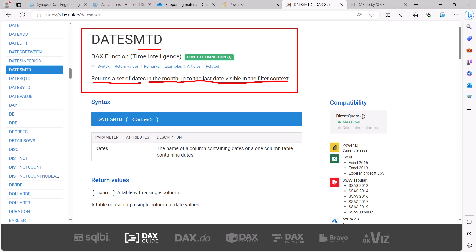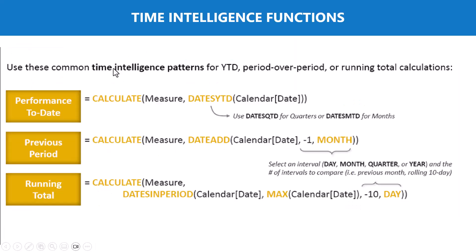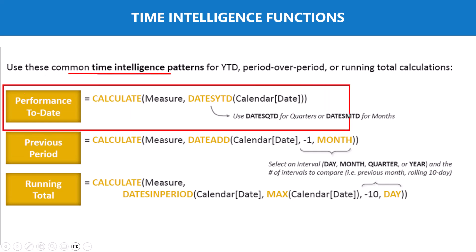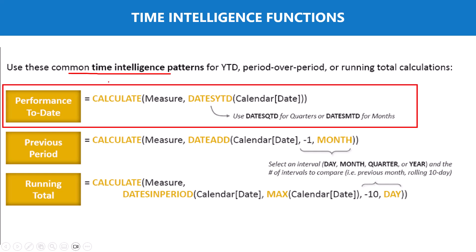Now let's go to the Power BI Desktop environment and see how we can use these functions. Before going into Power BI, there are three patterns we are going to look at. The focus for this video is the performance-to-date pattern. Remember, the only requirement for time intelligence is to have a date table, and then using that date table along with the time intelligence functions we can create these patterns.